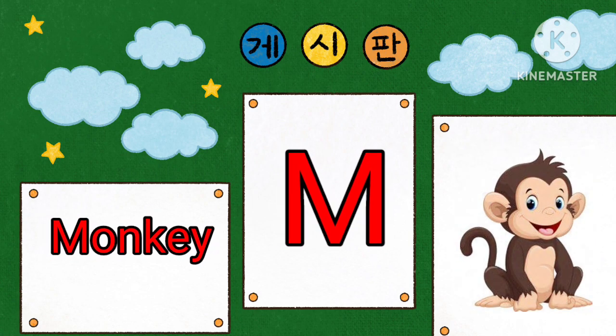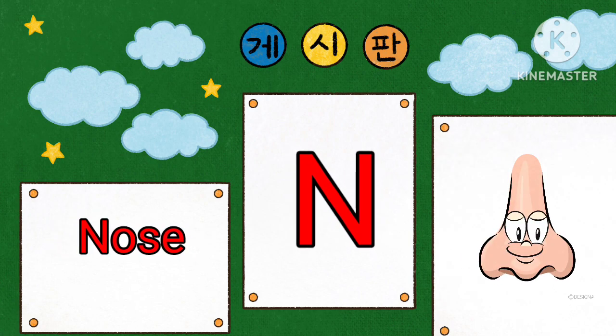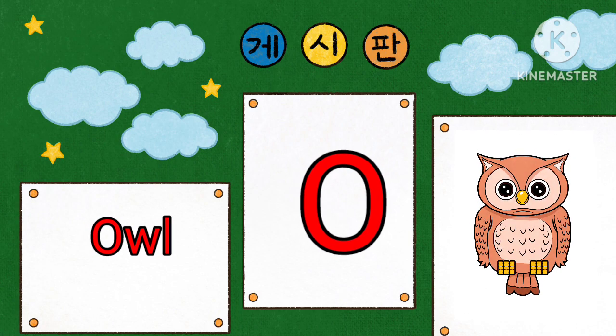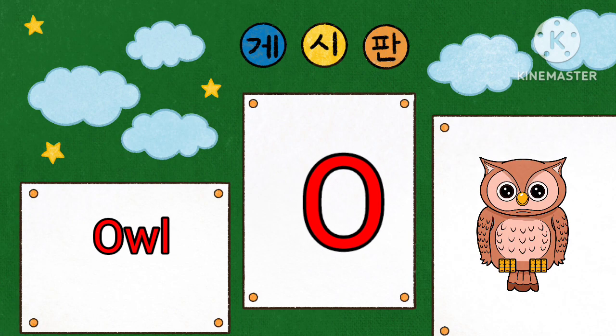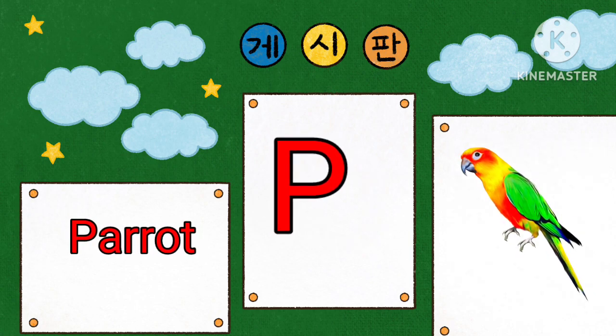M is for Monkey. N is for Nose. O is for Owl. P is for Parrot.